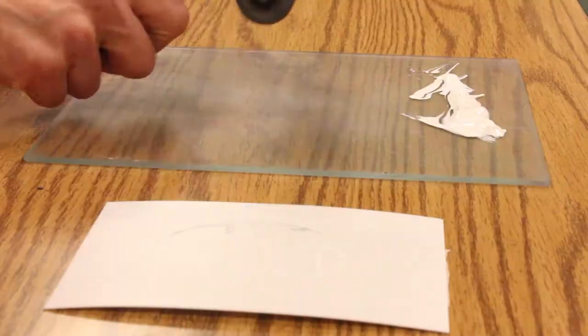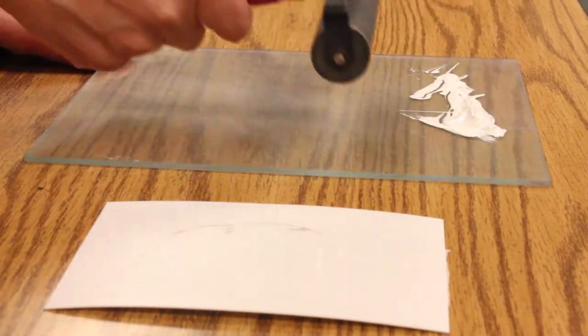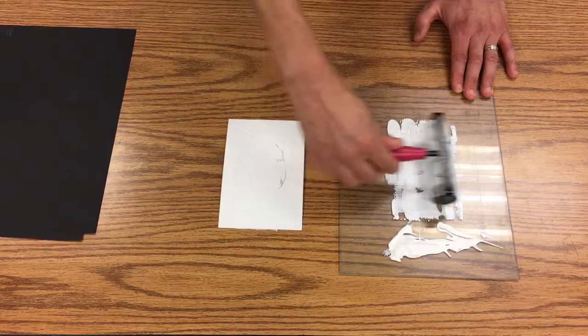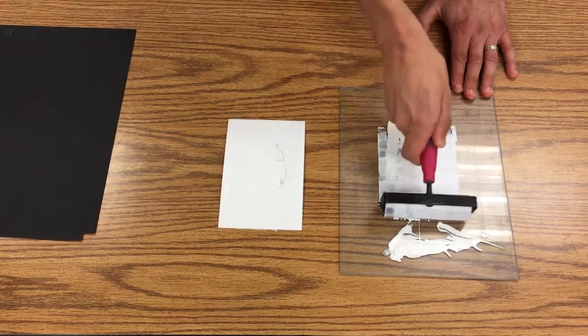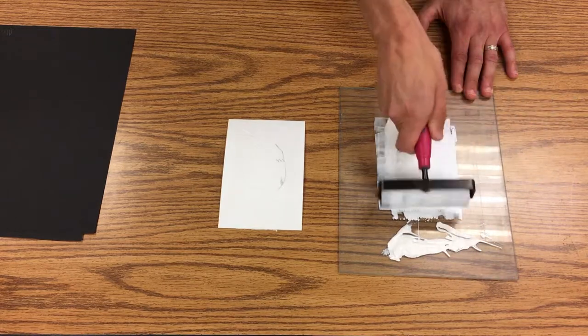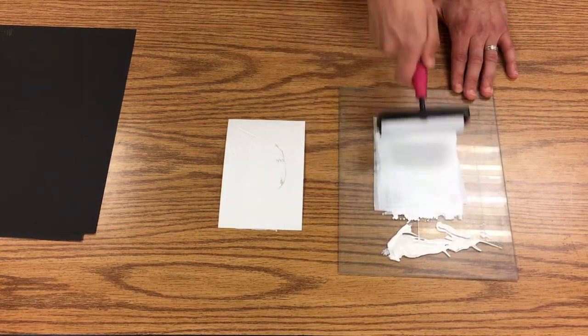To prepare, I take my brayer and tap it a little bit in the ink, then roll backwards. Sometimes I have to go this way to spread it across. Notice how I'm not getting any ink on these areas of the plexiglass – I'm just keeping it in the center.